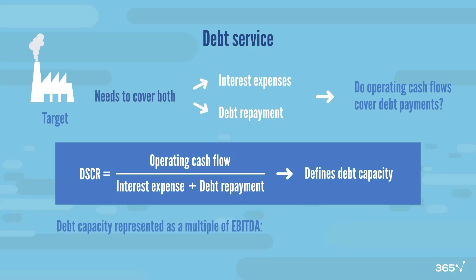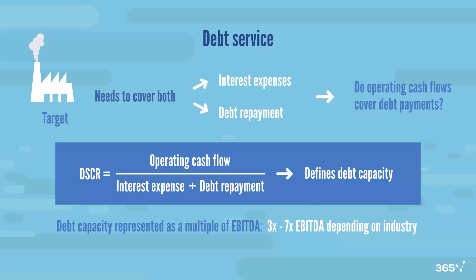Depending on the lender's risk appetite, they would feel comfortable with a DSCR ratio that does not fall under a certain threshold throughout the entire forecast period of the LBO model. It is up to the specific lender to determine an exact DSCR value, and this relationship is what defines a transaction's debt capacity. Very often, debt capacity in an LBO deal is expressed with the debt-to-EBITDA multiple, which can range from 3x to even 7x depending on the industry. However, the drawback of debt-to-EBITDA is that it doesn't take interest payments into consideration, so the DSCR ratio is what lenders are more likely to consider.